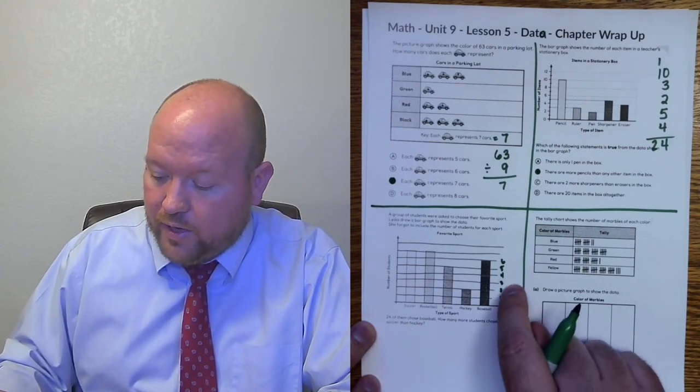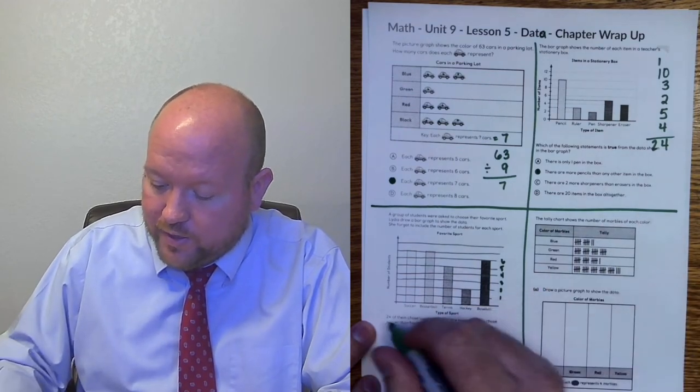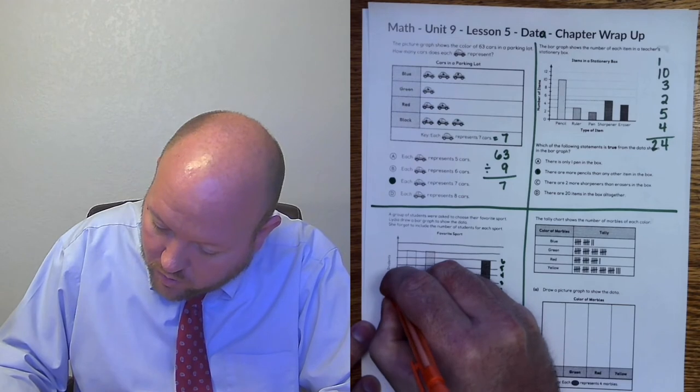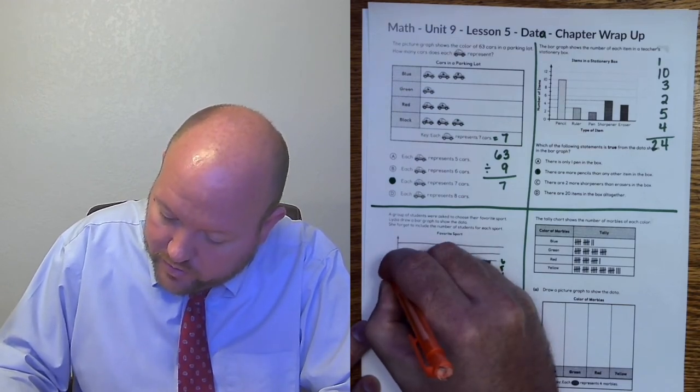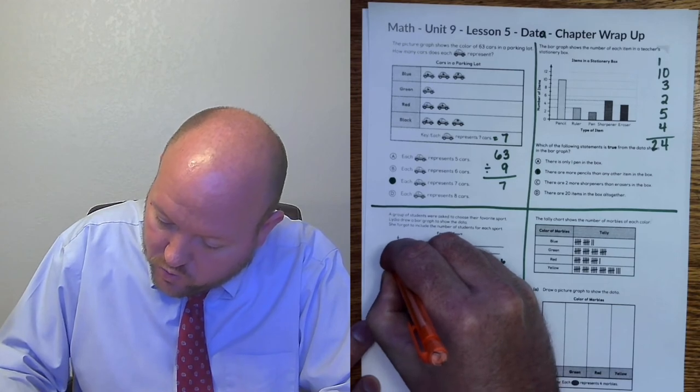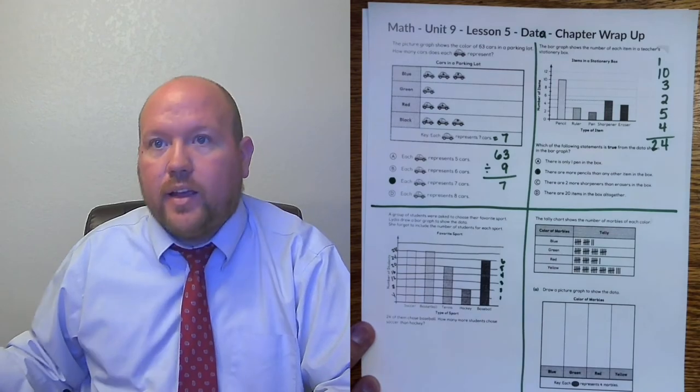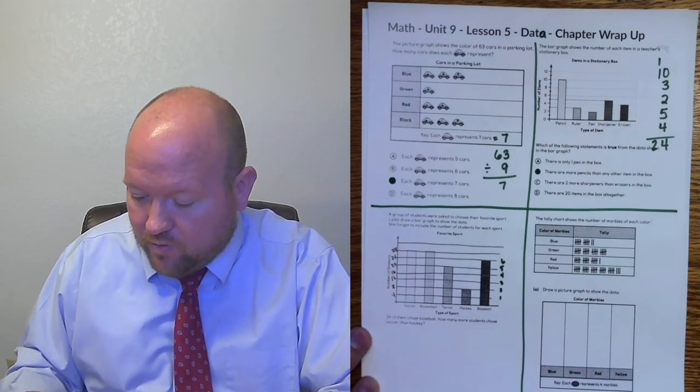Four, eight, 12, 16, 20, 24. Oh, so each one is equal to four. So I can put that in now. So I can make this four, eight, 12, 16, 20, 24, 28. So now I know how much each line equals because I was able to figure it out from baseball.